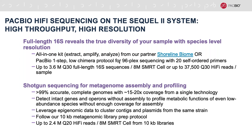For shotgun sequencing, we recommend setting a threshold of 99% accuracy, or the default for generating HiFi reads. You can do assemblies as long as you have 15 to 20-fold coverage. You can also detect intact genes and operons without assembly, allowing you to profile metabolic functions of even low-abundance species. You can also leverage epigenomic data to cluster contigs and plasmids from the same strain. We recommend following our 10 KB metagenome library prep protocol, which is expected to produce approximately 2.4 million Q20 and above HiFi reads per 8M SMRTcell.